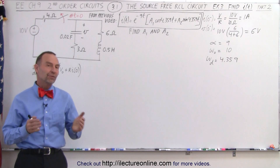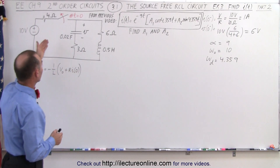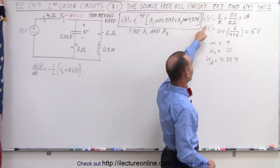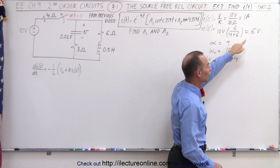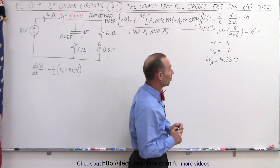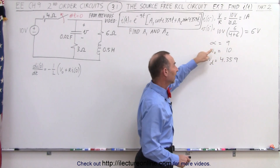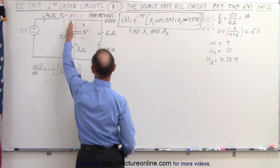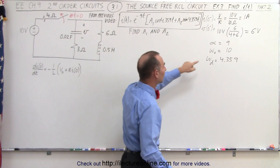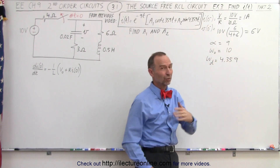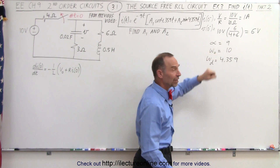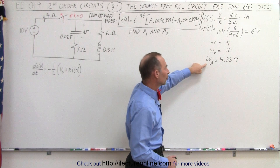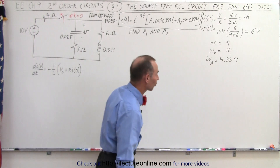Welcome to our lecture online. In the previous video we started with a circuit and found that the initial current before the switch opened was equal to 1 amp, and the voltage across the capacitor was equal to 6 volts. We also found that the damping factor was 9 and the natural frequency of the source-free RCL circuit after the switch opens was 10. Since the damping factor was less than the natural frequency, we had an underdamped system, and we found the natural damped frequency of 4.359.